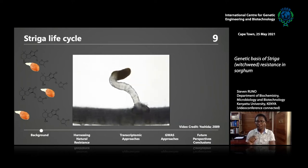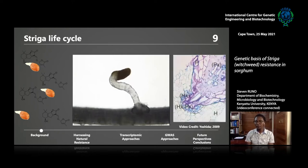After germination, Striga locates the host root and grows very fast towards the host. It digs inside the host, continues growing inside, and establishes a feeding structure called the haustorium. The haustorium is a very specialized structure: cells very close to the host xylem differentiate rapidly to become xylem vessels, which Striga uses to steal nutrients from the host. Phytotoxicity also sets in at this point, and it is really hard for plants to recover — you can already see wilting three days after infection.